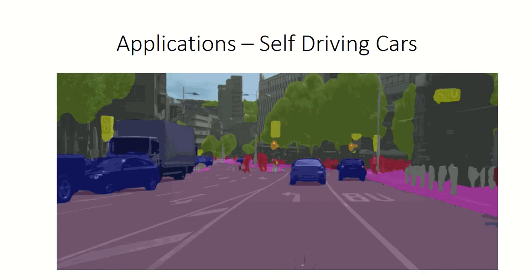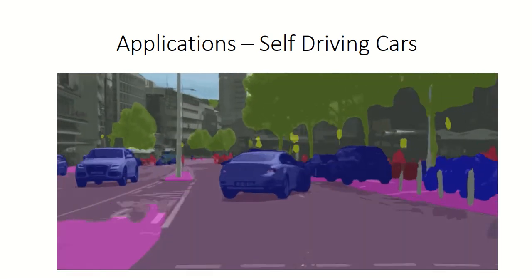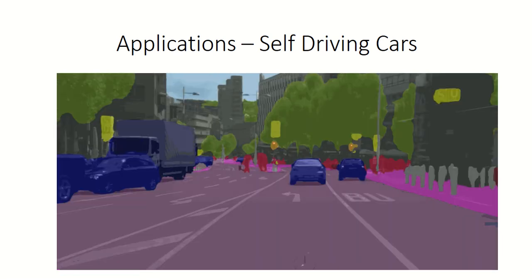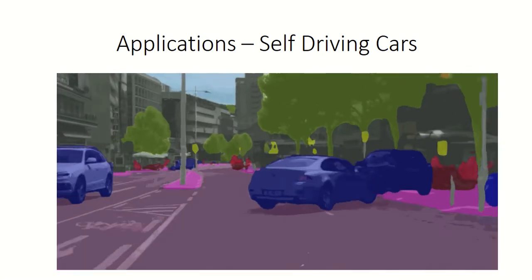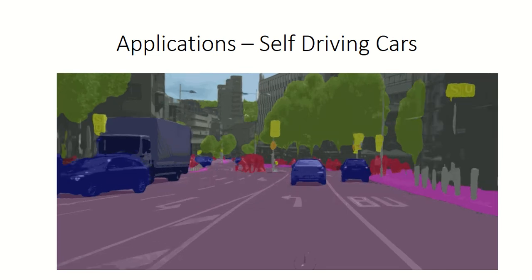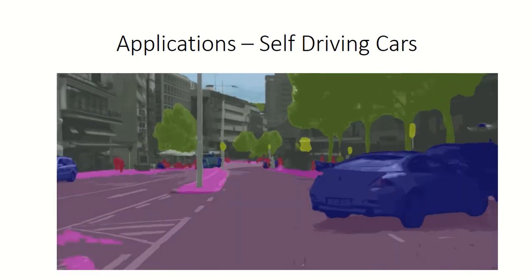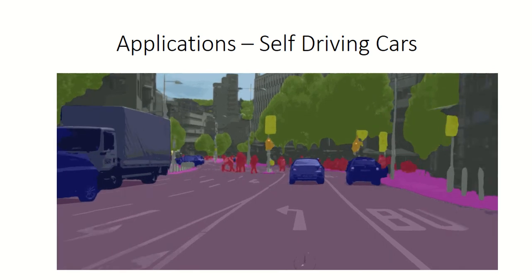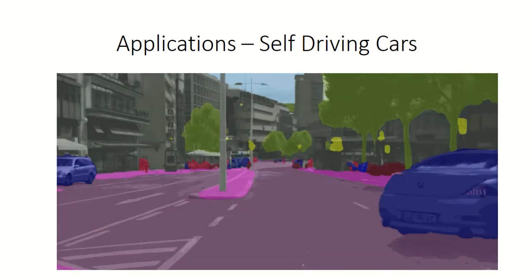Now where is image segmentation used? It's mostly used in self-driving cars. In self-driving cars it's not just important to detect the object in front of you — it's always important to detect the shape of the object in front of you. For example, the car can detect there is a road in front of it, but you have to segment that road and correctly identify whether it is a curve or a straight road.